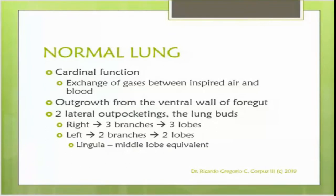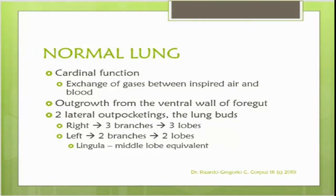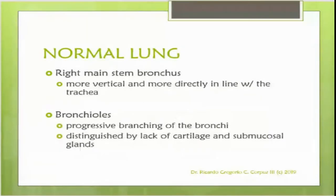The right has three branches, therefore there are three lobes: the upper lobe, the middle lobe, and the lower lobe. The left has two branches, therefore there are two lobes, and the lingula is the middle lobe equivalent in the left lung. Both left and right lungs have ten surgical sections, even if one has three lobes and the other has two.